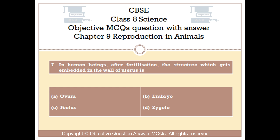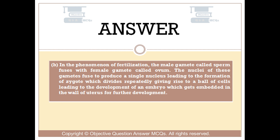The right answer is Option B. In the phenomenon of fertilization, the male gamete called sperm fuses with the female gamete called ovum. The nuclei of these gametes fuse to produce a single nucleus, leading to the formation of a zygote, which divides repeatedly giving rise to a ball of cells, leading to the development of an embryo which gets embedded in the wall of the uterus for further development.